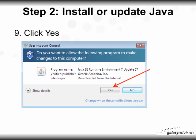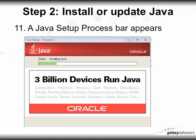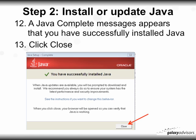A security question will appear asking 'Do you want to allow the following program to make changes to this computer?' Click Yes. A series of windows will come up — click Install. A Java setup progress bar will appear while it performs the installation. Finally, a Java complete message appears confirming you have successfully installed Java. Click Close.